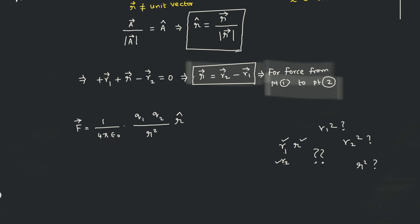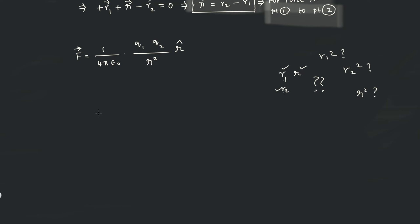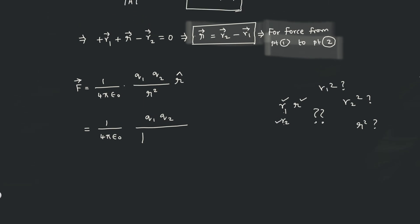If you want to express everything in terms of the usual r1 and r2 instead of script r, the equation has to be rewritten: it equals 1 divided by 4π ε₀, multiplied by q1 times q2, divided by the modulus of (r2 minus r1) squared, where script r equals r2 minus r1. The modulus means you are taking the scalar (dot) product of the vector with itself.